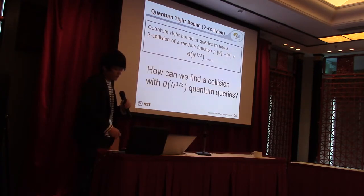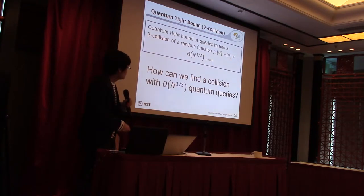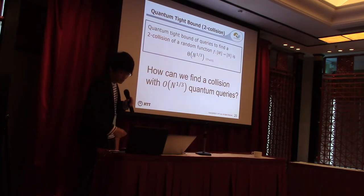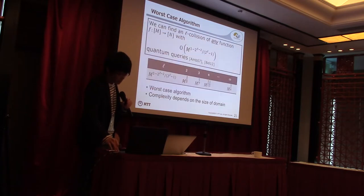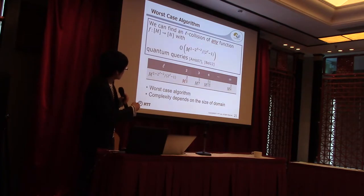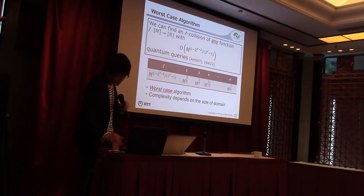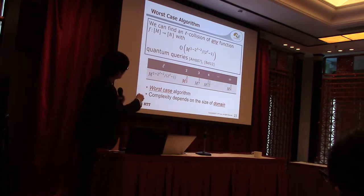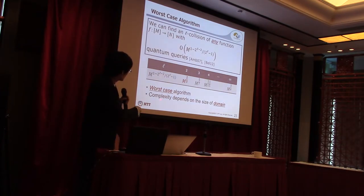How can we find a collision with this quantum complexity? To construct such quantum algorithms, I first describe a worst-case algorithm to find multiple collisions. We can find an L-collision of any function f with a certain complexity. This algorithm is a worst-case algorithm, meaning f is assumed to be any function, and this complexity depends on the size of the domain.